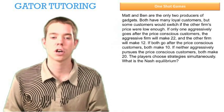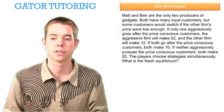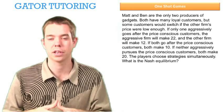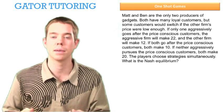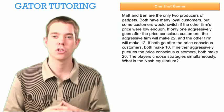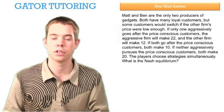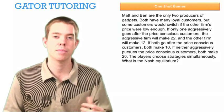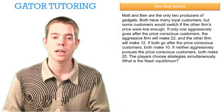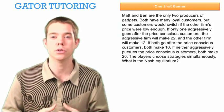First, let's talk about what choosing strategies simultaneously means. It doesn't necessarily mean, in the fashion that we like to think of simultaneous, as happening at the same time. It's more that Matt doesn't know what Ben's going to do when he chooses his strategy. So it's not that they both choose strategies on Monday at the same time — it's that Matt has no idea what Ben's doing when he chooses his strategy.